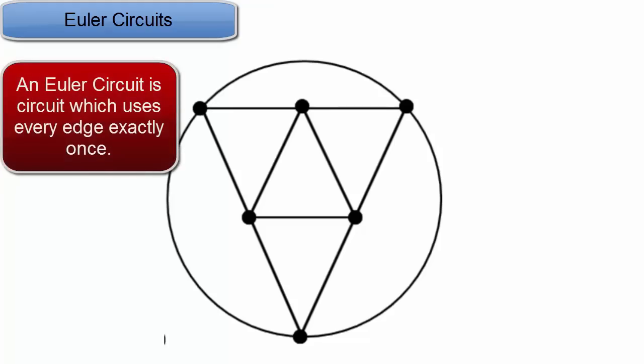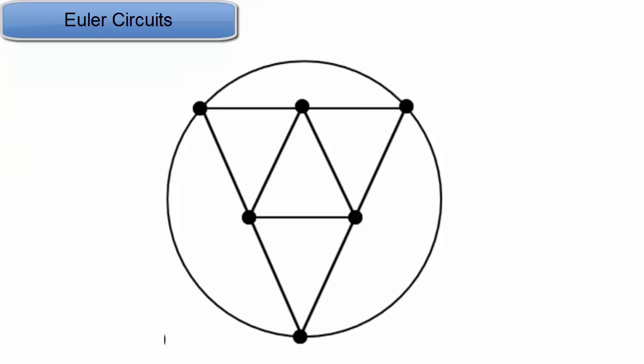Recall that an Euler circuit is a circuit which uses every edge exactly once. We would like to have some understanding of when a given graph possesses an Euler circuit and when it does not. We would ideally like some kind of useful criterion to do this, something that was easy to check.